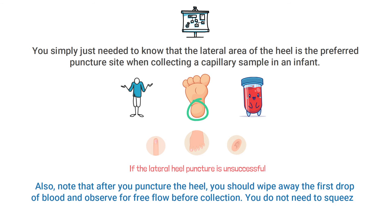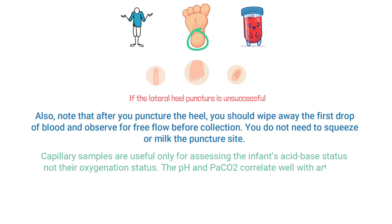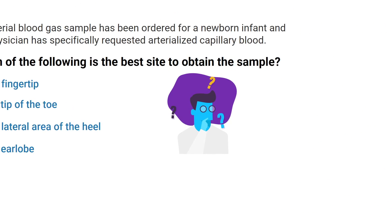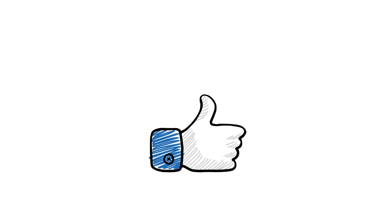After you puncture the heel, you should wipe away the first drop of blood and observe for free flow before collection — you do not need to squeeze or milk the puncture site. Importantly, capillary samples are useful only for assessing the infant's acid-base status, not oxygenation status. The pH and PaCO2 correlate well with arterial blood; however, the PaO2 does not. The correct answer is C) the lateral area of the heel.